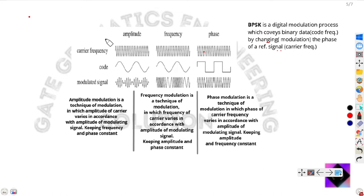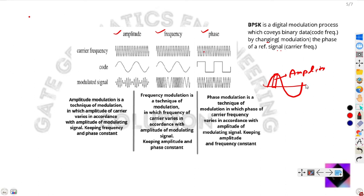The types of modulation are amplitude modulation, frequency modulation, and phase modulation. Amplitude is the distance shown by the wave. The number of waves per unit time is called frequency. The relative position of the wave with time is the phase — that means zero degrees, 90 degrees, and minus 90 degrees are the phases of the carrier frequency.